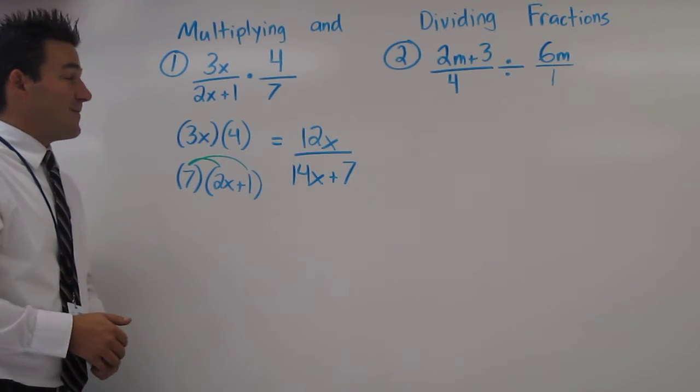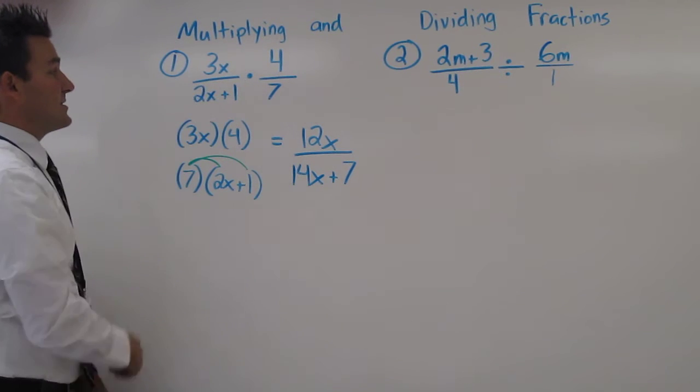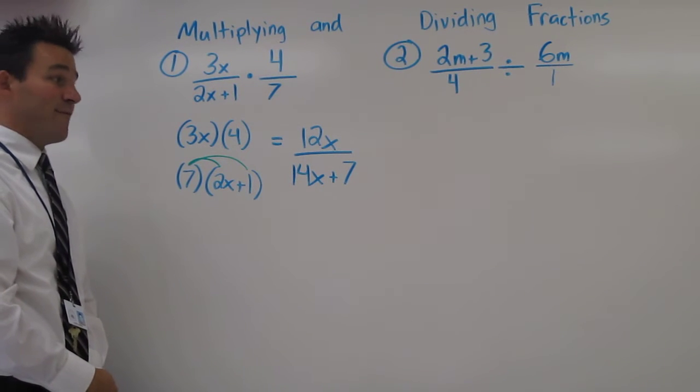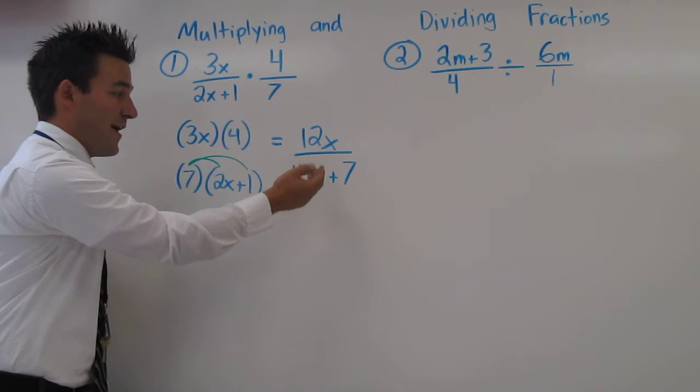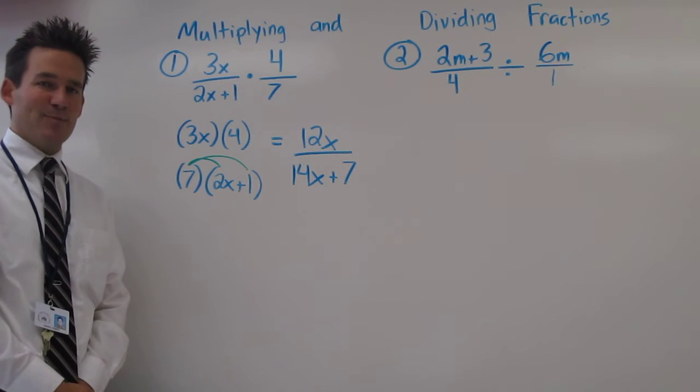That's our answer. The product of 3x over 2x plus 1 and 4 sevenths is 12x over 14x plus 7.